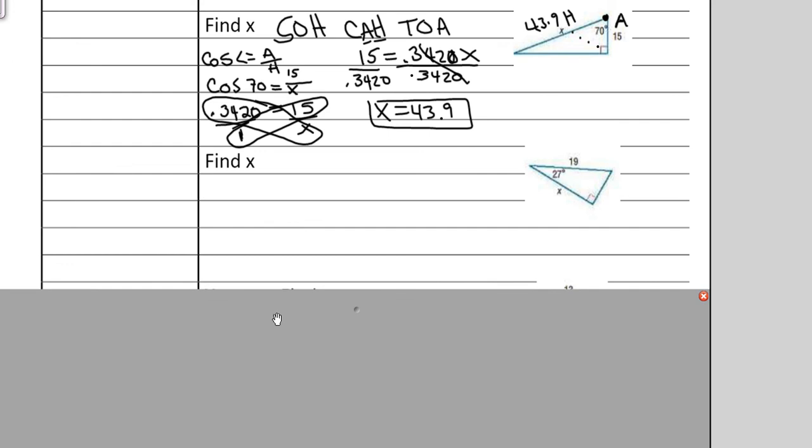Okay, we're going to do one more example together and then I will release you to do the rest on your own. So the next example, again, we're given an angle measure. We're given a side and we're asked to find the second side. So in relationship to 27, x is the adjacent side. And 19 is also adjacent to 27. But again, it has a special name. It's across from the right angle. It's called the hypotenuse.